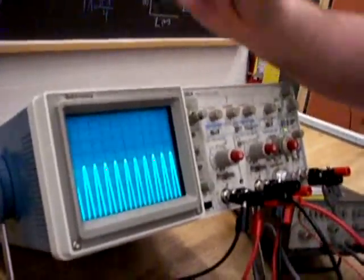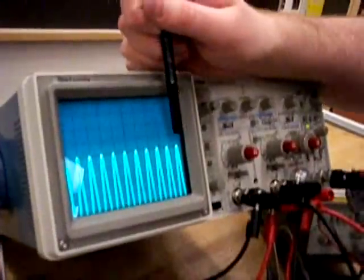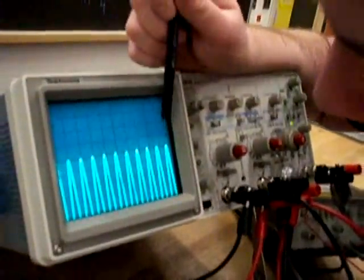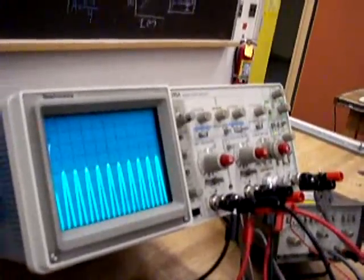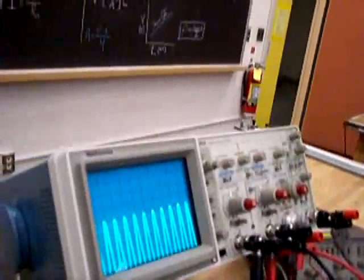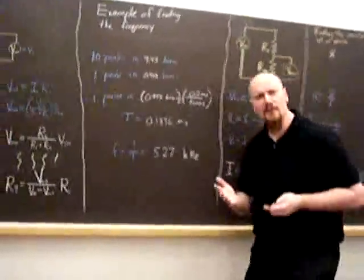And let's see how many boxes those 10 peaks fit in. So 1 box, 2 box, 3 box, 4, 5, 6, 7, 8, 9, 9.48 boxes. So let's keep in mind something here. If all 10 peaks fit in exactly those 10 boxes, we'd have exactly 5,000 hertz. But we don't. So let's see just what frequency we do have.